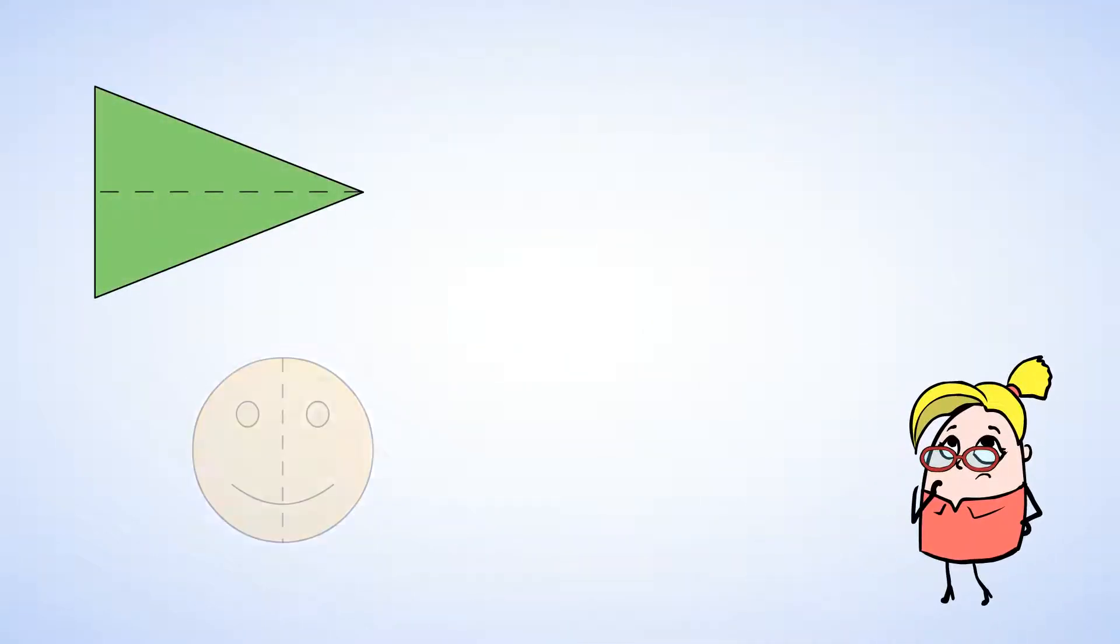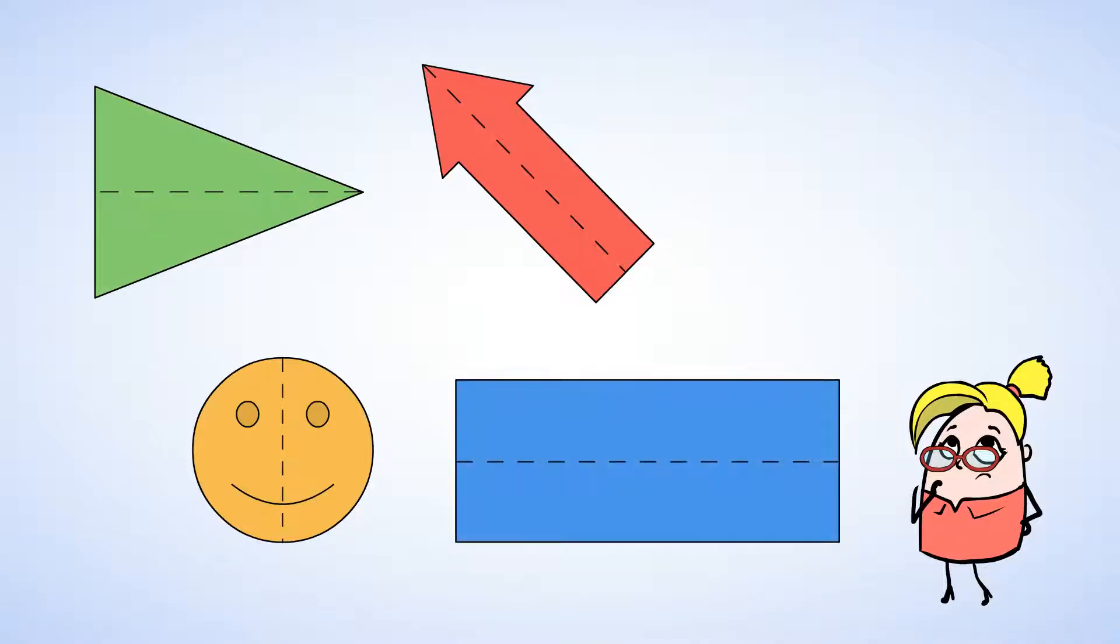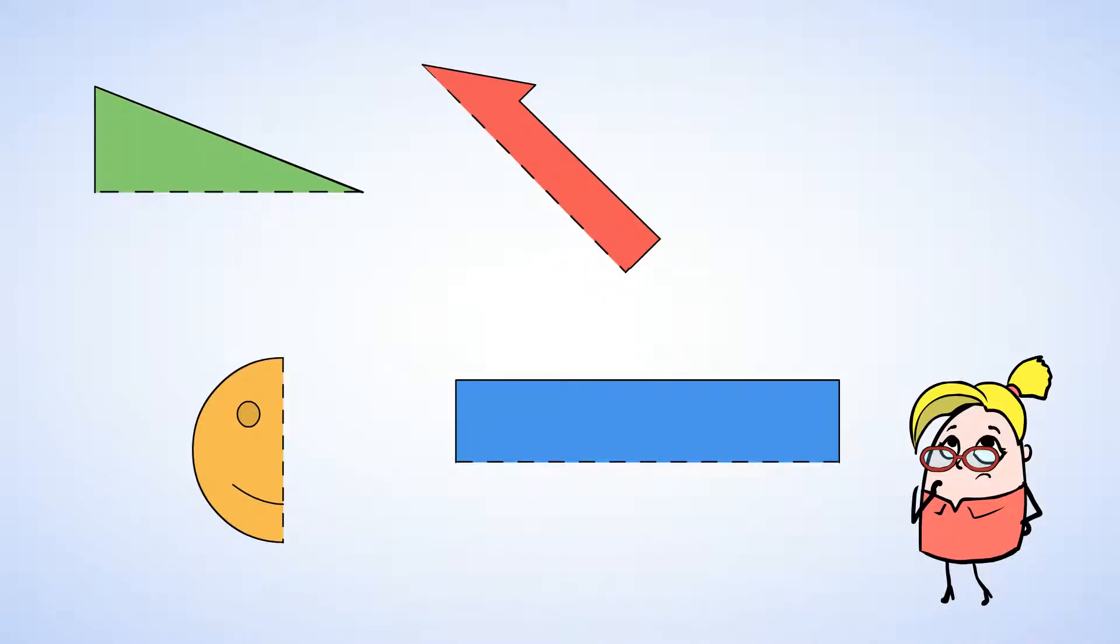Here are some examples of symmetrical shapes. The dotted line is the line of symmetry. If you fold the shape along the dotted line, the two parts will line up. Let's take a look at the rectangle.